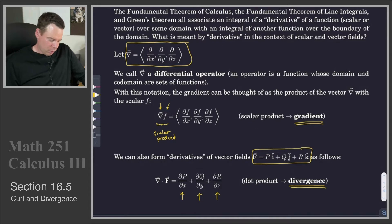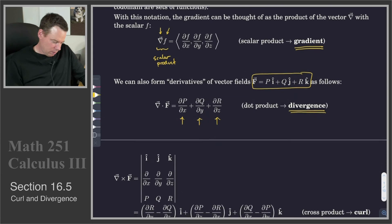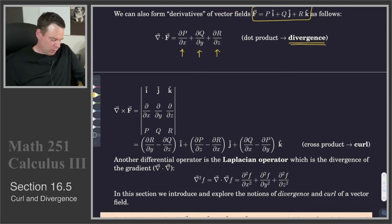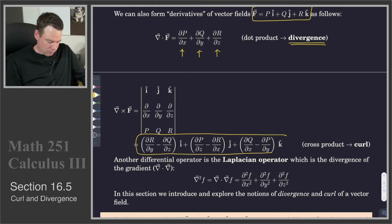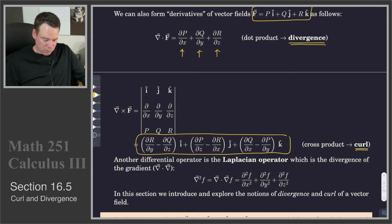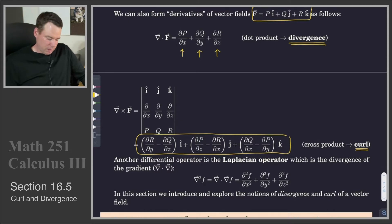If we think about what else we can do with two three-dimensional vectors, we can take their dot product, but we could also take their cross product. So if I take the differential operator del and cross it with a vector field, and just do the formal cross product, we get an object which is a vector field. That is what we call the curl of the original vector field — it takes in a vector field as input and produces a vector field as output, which is some kind of derivative of the original one.